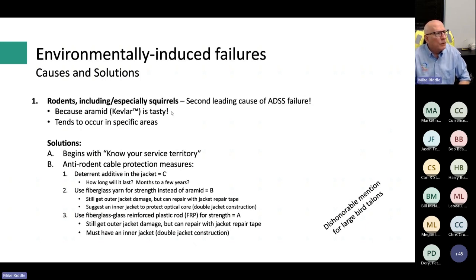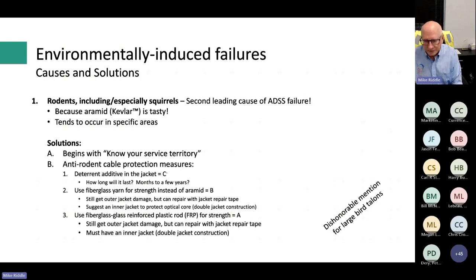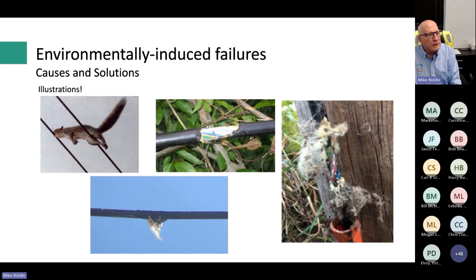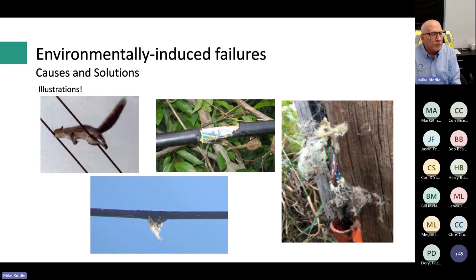Some utilities have also had problems with large birds of prey like hawks whose talons can pierce the outer jacket and cause problems. Pictures of rodent damage show animals have chewed through the outer jacket and damaged the strength member. Even where buffer tubes aren't fully chewed through, failure is likely because water will eventually get through the plastic.